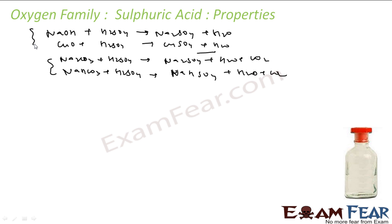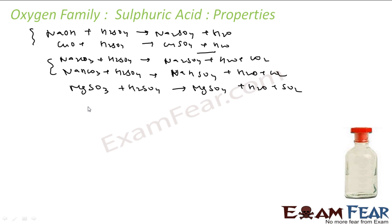Sulfuric acid also reacts with sulfides and sulfites. For example, magnesium sulfite reacted with sulfuric acid gives MgSO₄, water, and SO₂. Iron sulfide reacted with sulfuric acid gives FeSO₄ and H₂S.